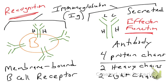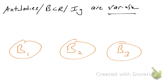I want to introduce the concept of the immunoglobulin molecule, which is this four-protein-chain complex existing in two different forms: the secreted form, commonly referred to as antibodies, or the membrane-bound form, commonly referred to as the B cell receptor. So antibodies, B cell receptors, and immunoglobulins — we're going to use those terms somewhat interchangeably.